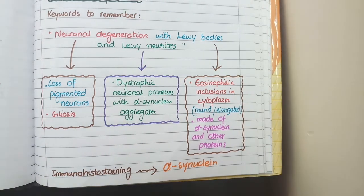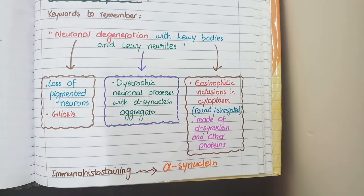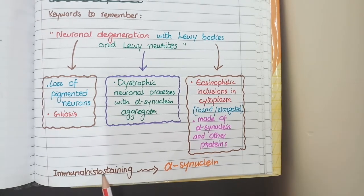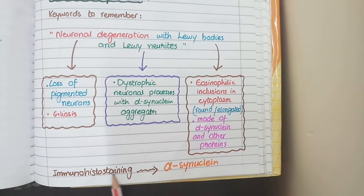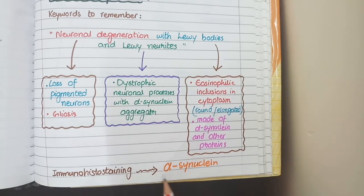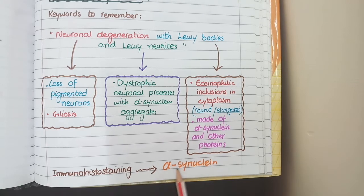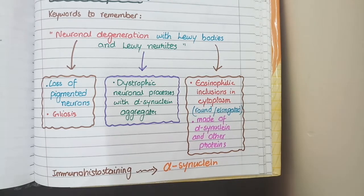The histopathological specimen of Parkinson's disease will stain positively for immunohistochemical staining for alpha-synuclein protein. This protein is present in Lewy bodies and Lewy neurites, so it can be detected immunohistochemically.